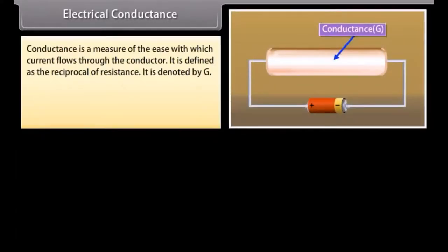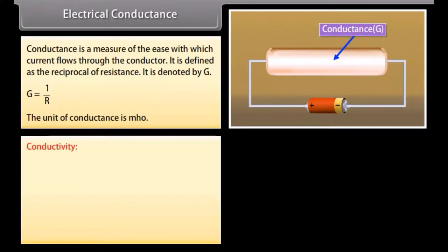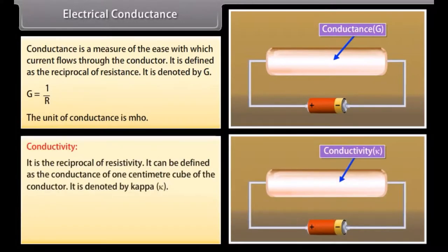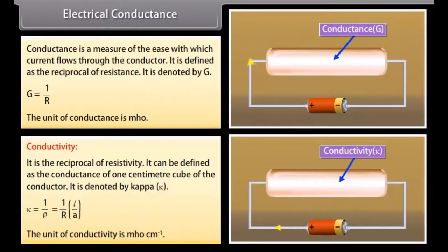Electrical conductance. Conductance is a measure of the ease with which current flows through the conductor. It is defined as the reciprocal of resistance, denoted by G: G = 1/R. The unit of conductance is mho (Siemens). Conductivity is the reciprocal of resistivity; it can be defined as the conductance of 1 cm³ of the conductor, denoted by κ: κ = L/(R × A). The unit of conductivity is mho cm⁻¹.